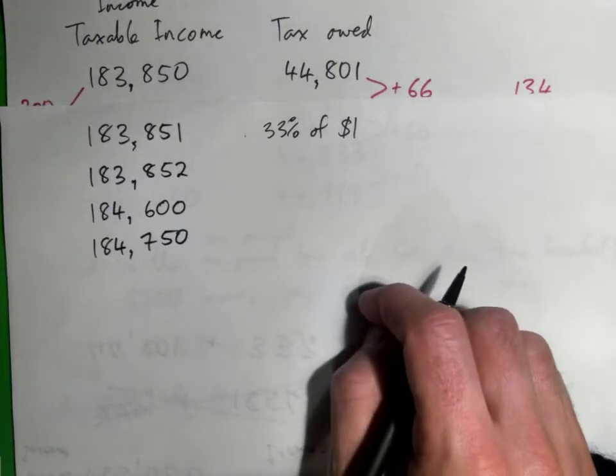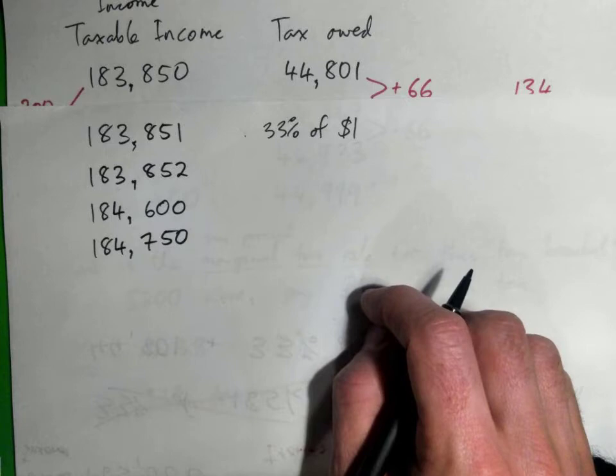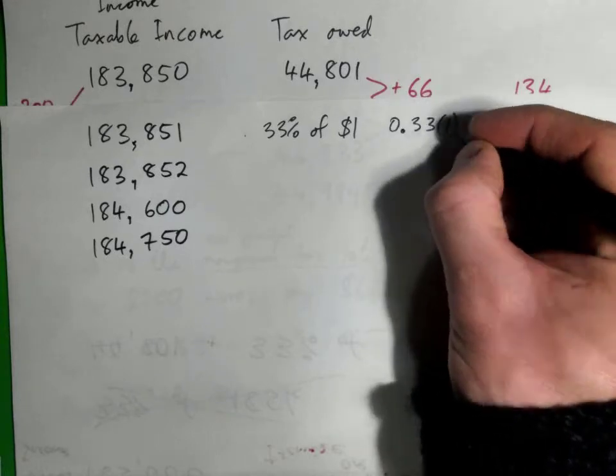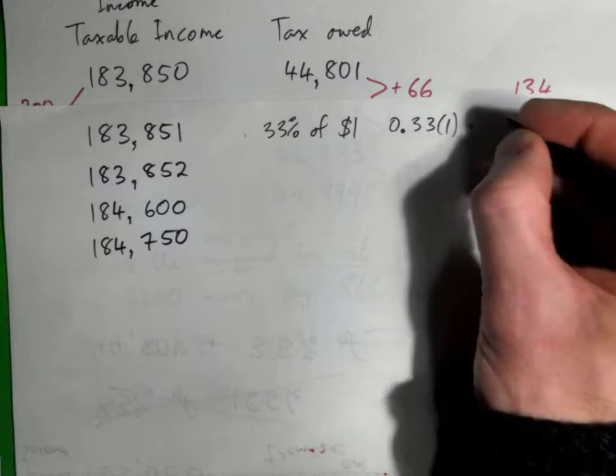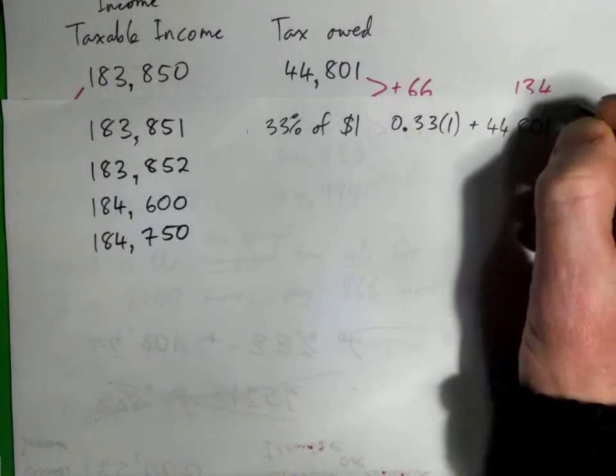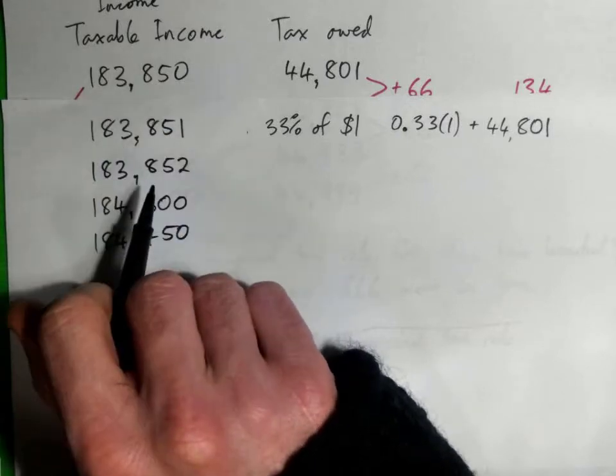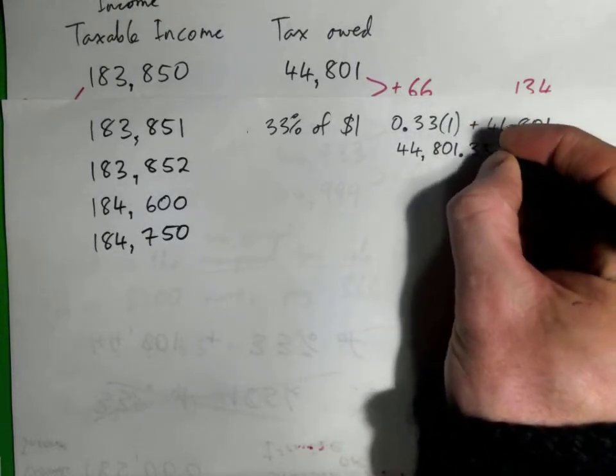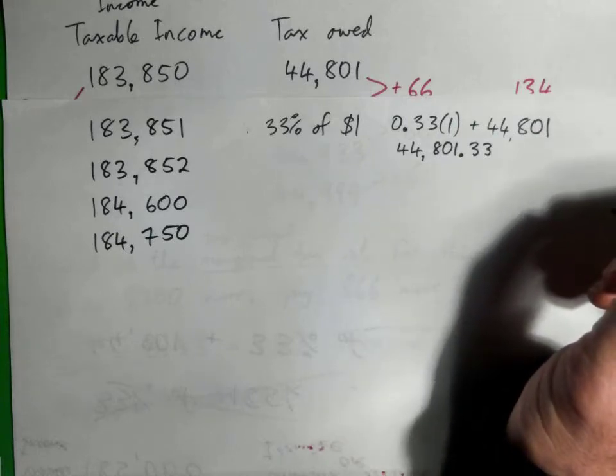So what's 33% of a dollar? So we're going to pay 0.33, or you could go 0.33 times 1, basically, to get your 33 cents. And so you paid 33 cents extra, but you've got to pay this beginning amount also, the $44,801, because you owe this on this amount that you earned. And you've got to pay an extra 33 cents. So it's $44,801.33. So that's the tax on that.